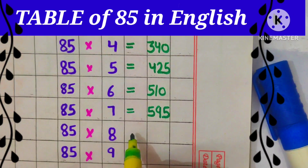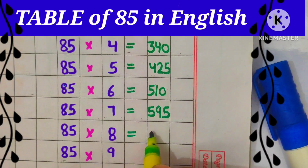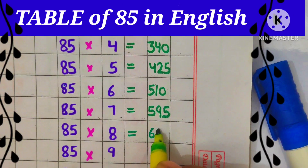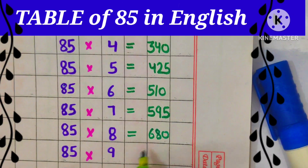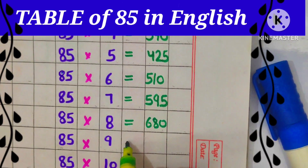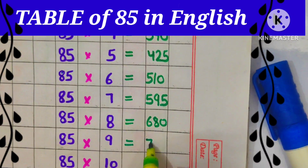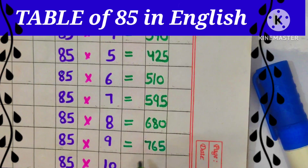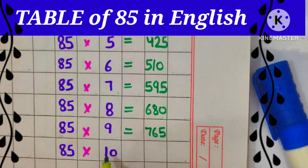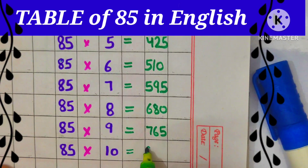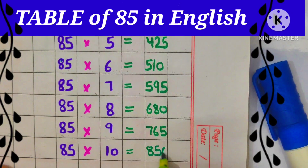85 8s are 680, 85 9s are 765, 85 10s are 850.